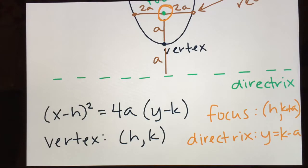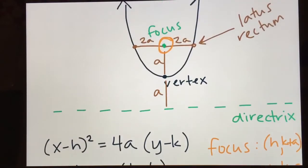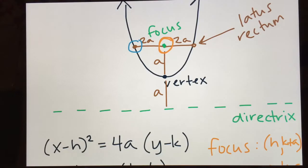Sometimes they'll ask what are the endpoints of the latus rectum, or what is the length of the latus rectum. If you want to find the endpoints of the latus rectum, you take your focus and go left 2a from it and right 2a from it — that's how you find those two endpoints. So the endpoints are (h − 2a, k + a) and (h + 2a, k + a).